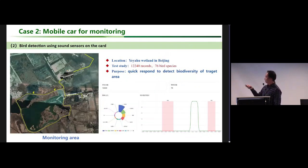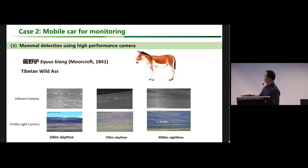This is for bird detection using sound sensors on the car. In one day, we collected more than 1,200 sound records belonging to 76 species. This is for mammal detection using high-performance cameras on our car.